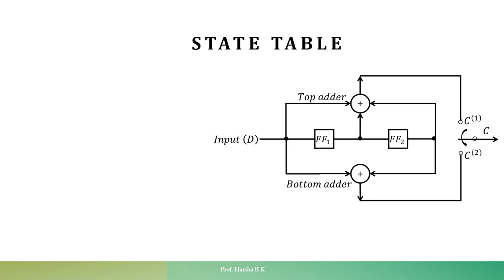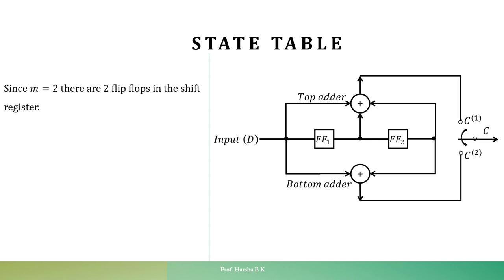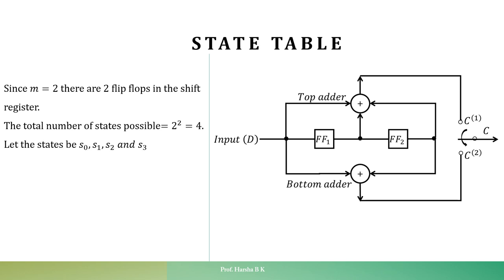Now let us write the state table for the given encoding circuit. We know M equals 2 because there are two stages in the shift register. Hence, the total number of states possible is 2^M, which is 2^2, giving four possible states. Let us designate the four states as S0, S1, S2, and S3.